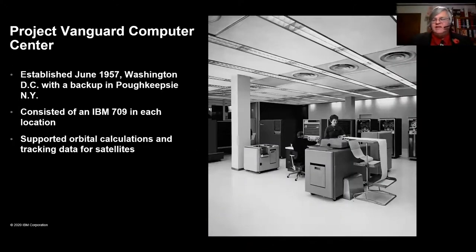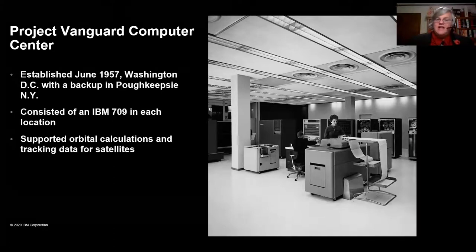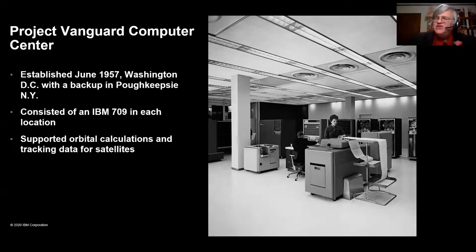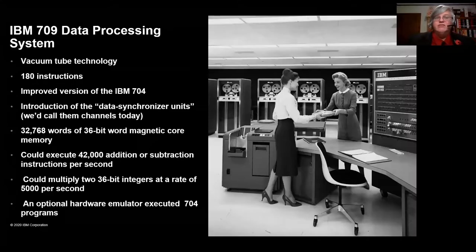For the execution of the Vanguard program, NASA established the Project Vanguard Computer Center in Washington D.C. in 1957, with a backup in Poughkeepsie, New York. It consisted of an IBM 709 in each location, and supported orbital calculations and tracking data from satellites. We're getting to the point where information is coming in and can be processed so quickly that it can be used in real time.